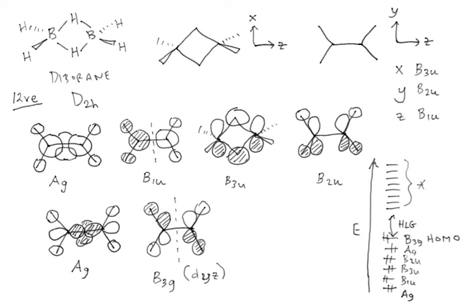The lowest two orbitals have significant boron 2s character, which is much lower in energy than the boron 2p orbitals. The upper four bonding MOs are based on boron 2p. The last orbital, B3g, is the HOMO because it has an anti-bonding node between the two boron atoms. Once we account for the inherent energy of the boron valence atomic orbitals, we can justify the whole qualitative energy ordering. So that's how to derive the bonding molecular orbitals for diborane.